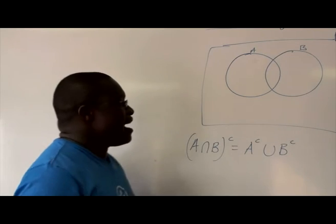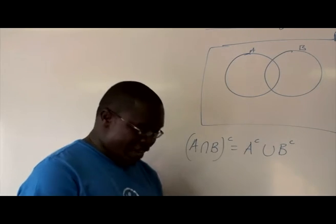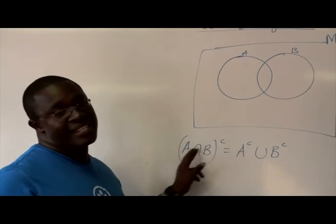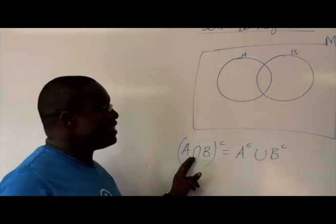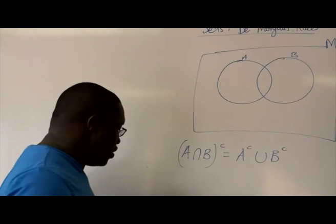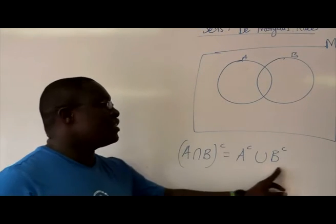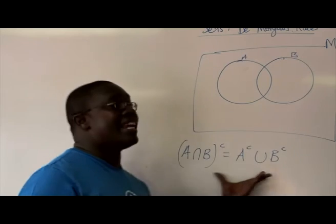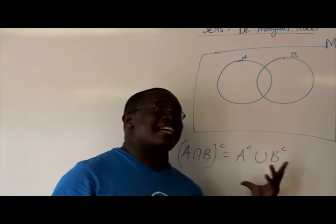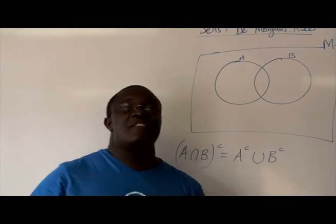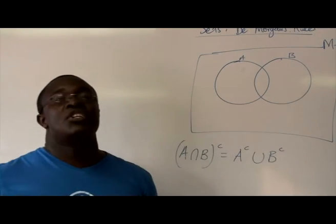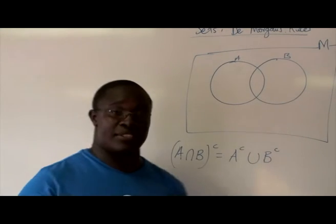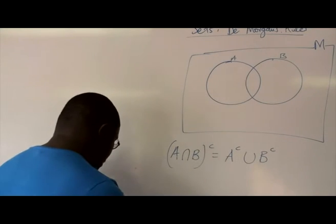I'm going to use the red color to illustrate the left-hand side, and then I'll use green to illustrate the right-hand side. If the shaded areas are the same, then I will have visually shown and proven De Morgan's rules.